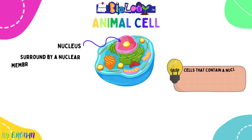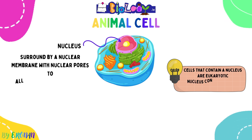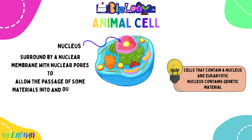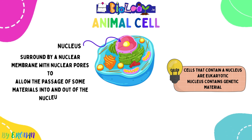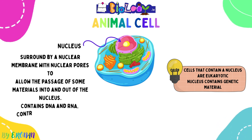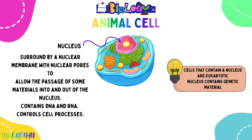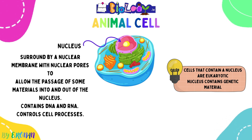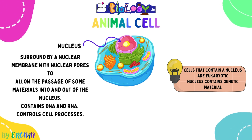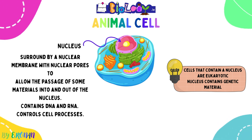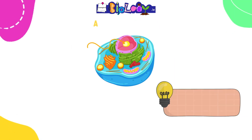The next organelle is the nucleus. It is surrounded by a nuclear membrane with gaps known as nuclear pores, which allow the passage of some materials into and out of the cell. The nucleus contains the genetic materials DNA and RNA and controls the cell processes and activities. Cells that contain a nucleus are known as eukaryotic, and eukaryotes contain DNA and RNA in their nucleus.